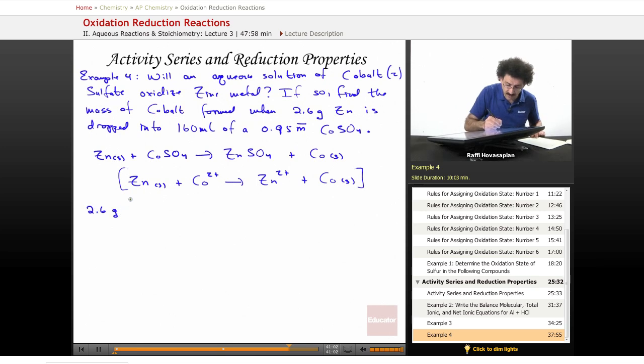So, 2.6 grams of, let me write a little shorthand. I'm going to specify zinc here so I don't have to keep writing it. So, 2.6 grams times, well, one mole of zinc is 65.39 grams, giving me 0.0398 mole of zinc.